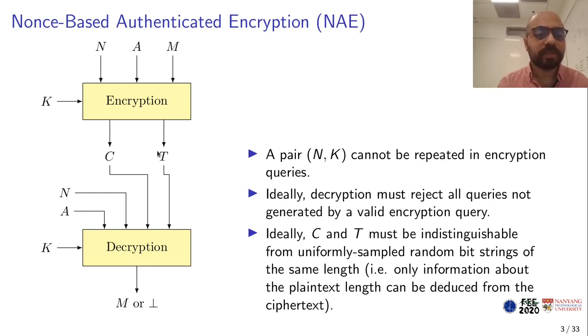It outputs a ciphertext and a tag. Then the decryption part takes the same secret key, same nonce, same associated data, ciphertext and tag. If the tag is correct, it outputs the decrypted message. If the tag is incorrect, it outputs an error. Ideally, we want the encryption to be able to detect all invalid tags, so it would only output the plaintext if the query was generated by a legitimate encryption oracle. For the encryption oracle, we require that the ciphertext and the tag are indistinguishable from random binary strings, meaning they look random and leak nothing about the plaintext except its length.